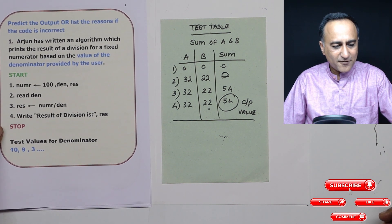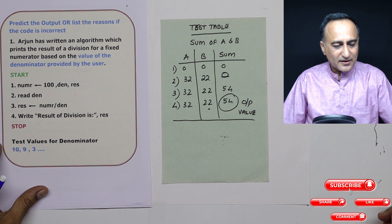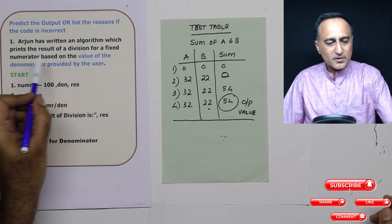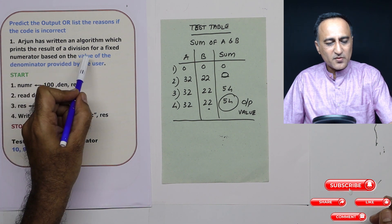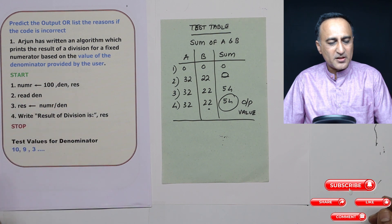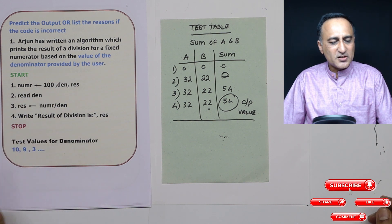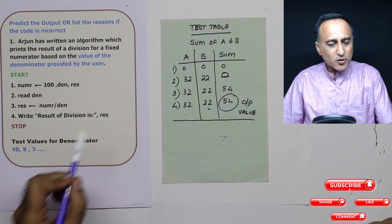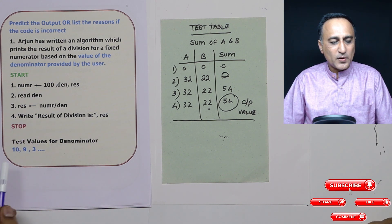What I have done here is I have written some code. Arjun has written an algorithm, which prints the result of a division for a fixed numerator based on the value of the denominator provided by the user. The numerator is fixed as 100, the user is going to enter the denominator and you need to predict what will be the result for different test values.